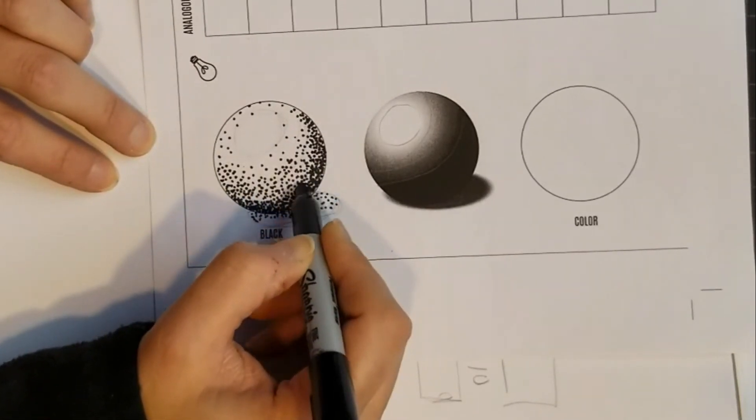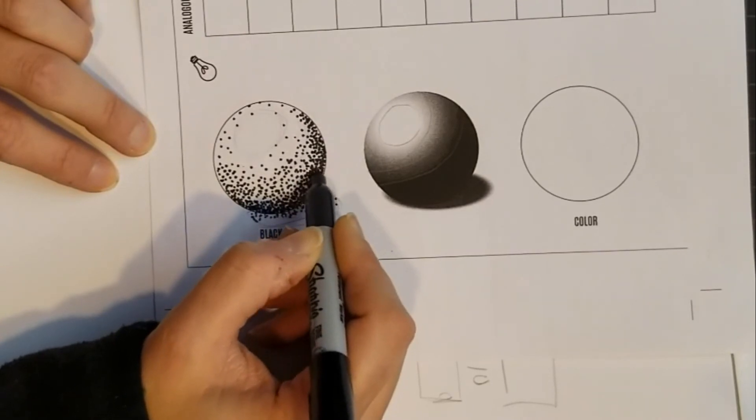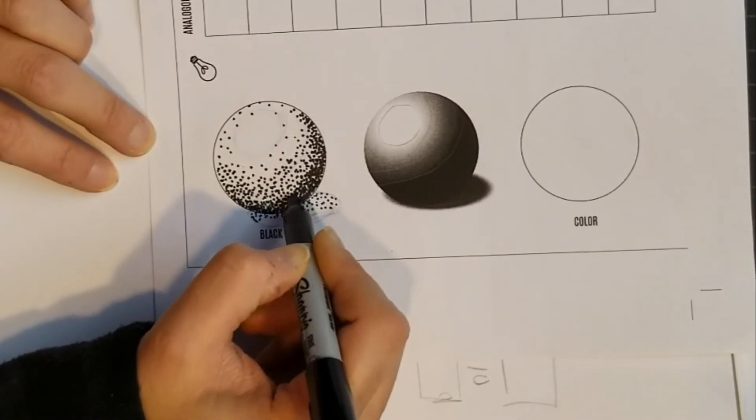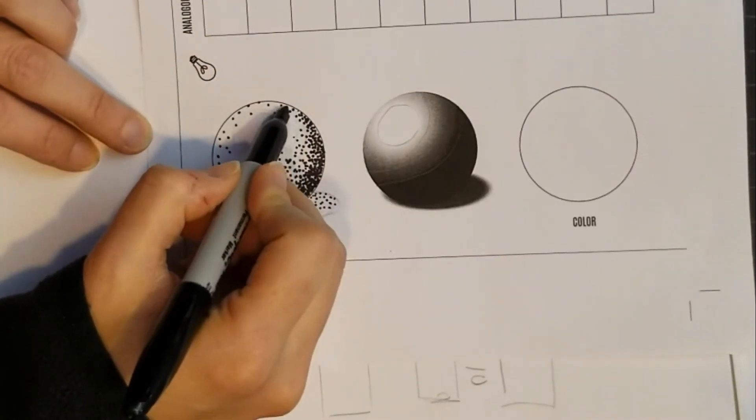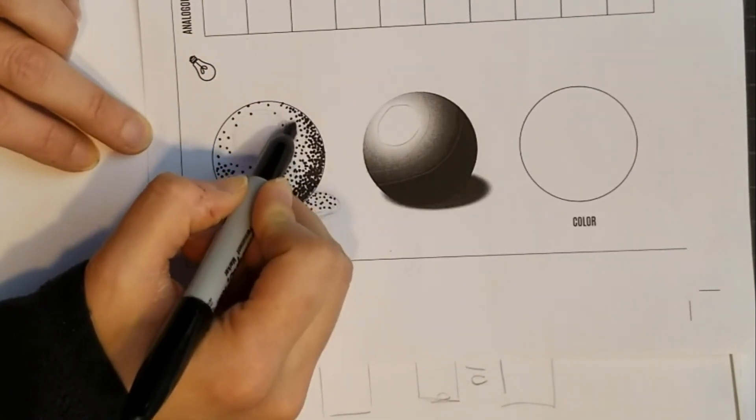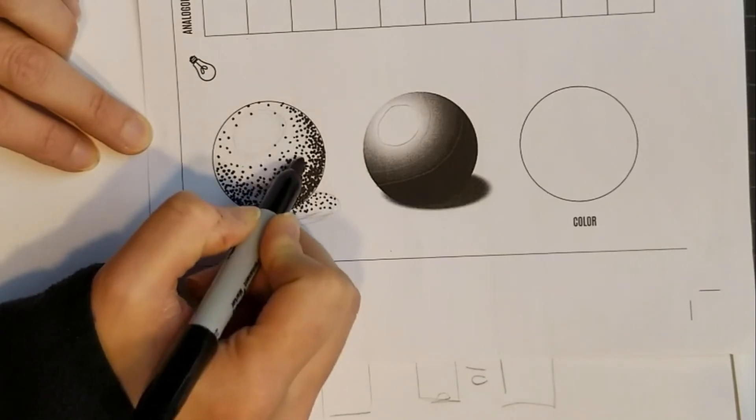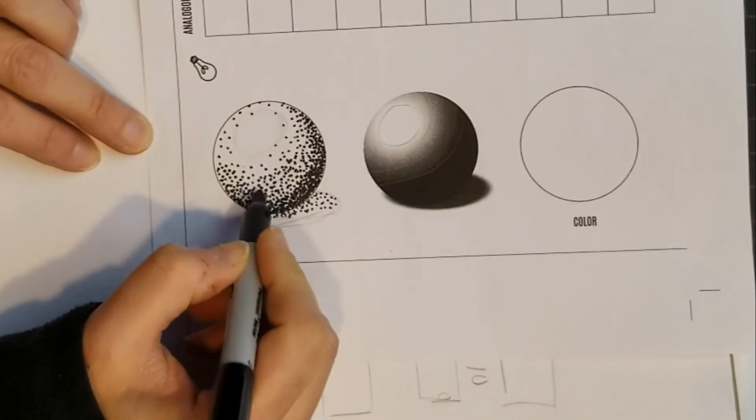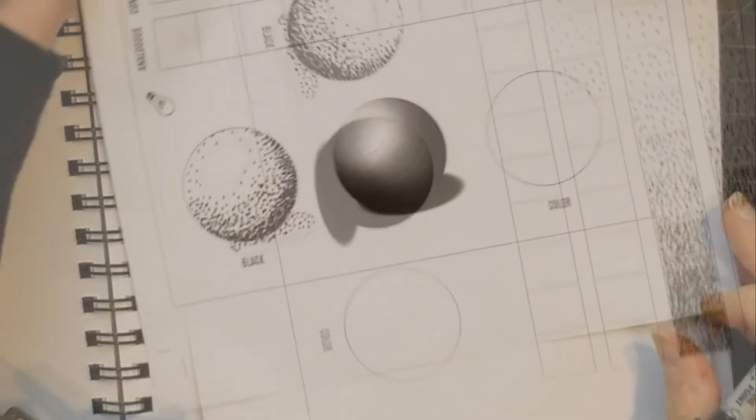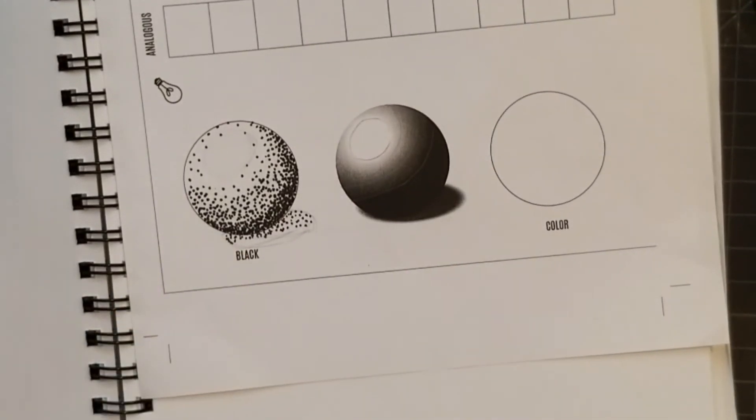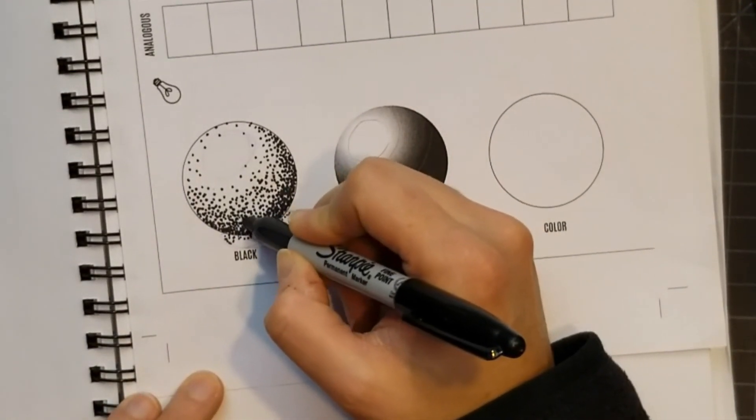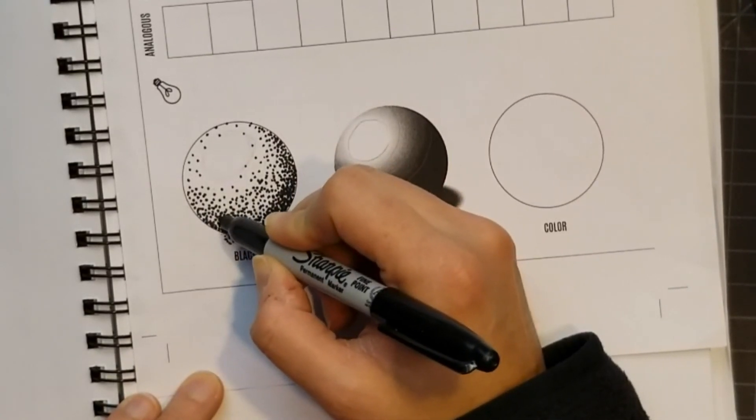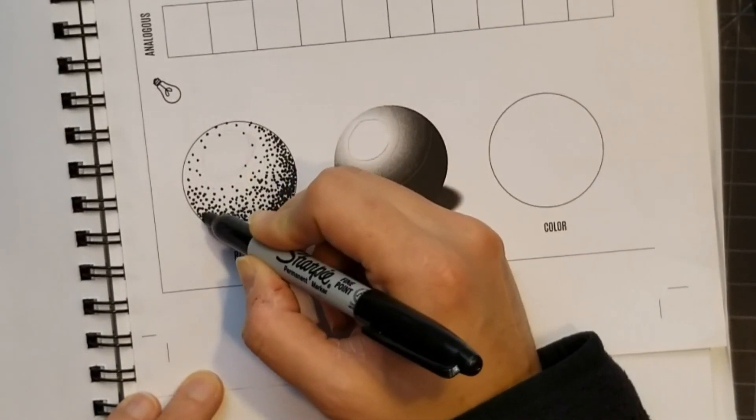It should start to look like a three dimensional sphere with the light source coming from this direction. I don't think I'm quite done yet. I think it needs to be a little bit darker and you want it to blend. You want a smooth transition between the values.